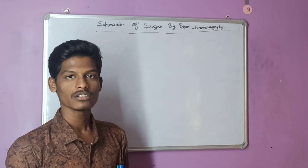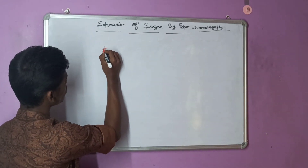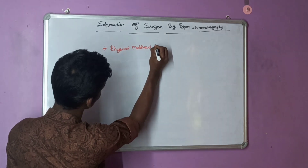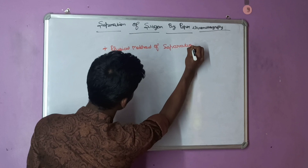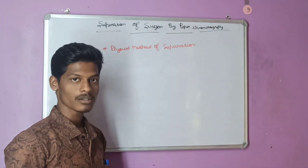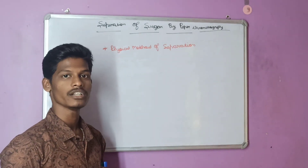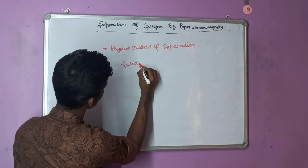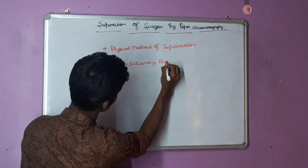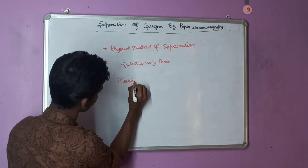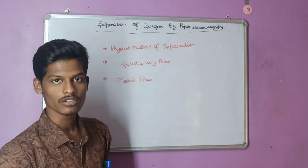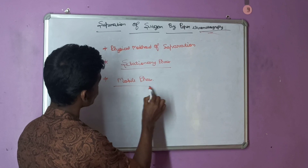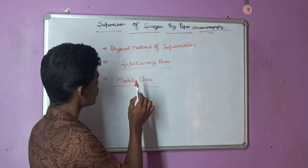So, what is chromatography? The definition of chromatography: chromatography is a physical method of separation. It is a separation method in which components are separated in two phases — that is, stationary phase and mobile phase. Chromatography is a physical method of separation in which separation is done in the stationary phase and components move in the mobile phase.